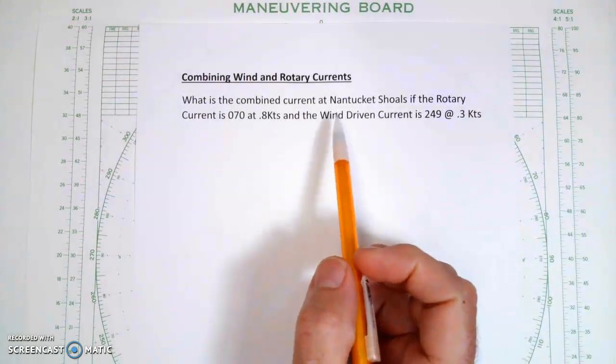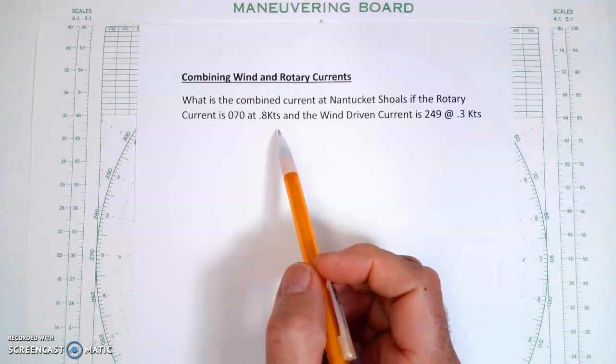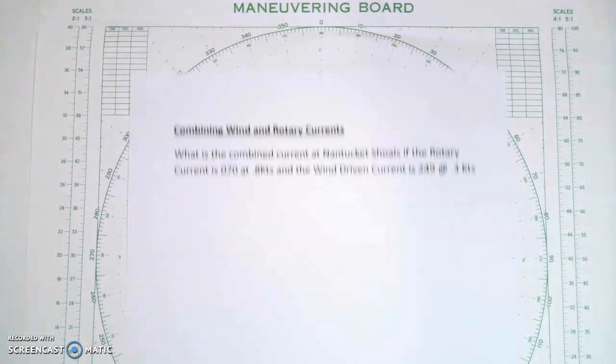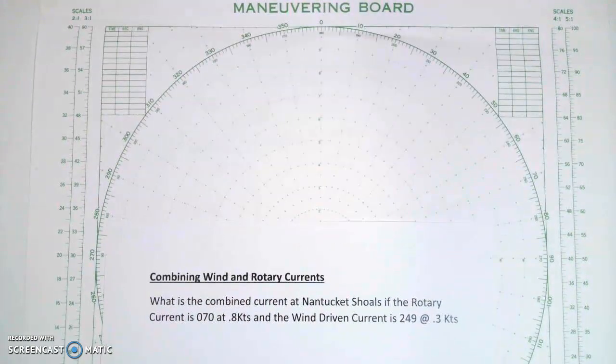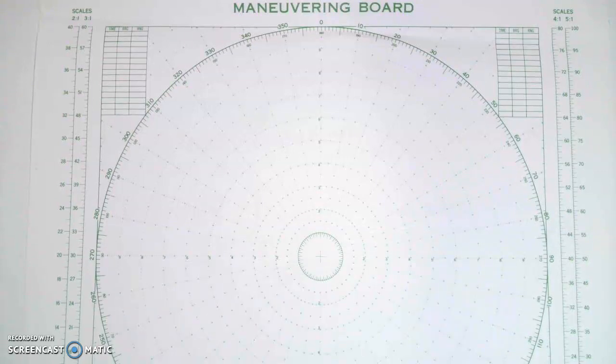All right, in this video we're just going to combine wind-driven and rotary currents, which is basically we're going to take two currents, put them together, and see what the resulted overall current will be. We can certainly do this using trigonometry, but I think it's a heck of a lot easier to do it on the maneuvering board. So I'm going to use a maneuvering board and some triangles.